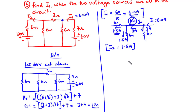You can confirm this using the current division rule — either way you get the same answer. So I1 = 6 A and I2 = 1.5 A when the 60 volt source is acting alone, i.e., when the 120 volt source is deactivated.